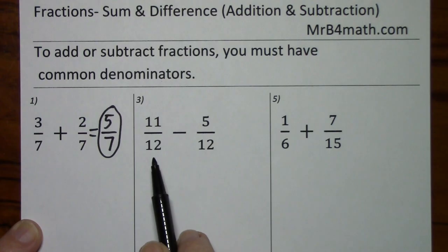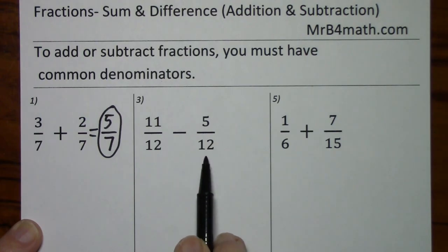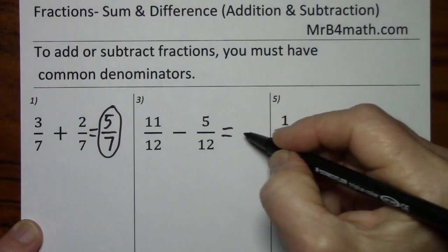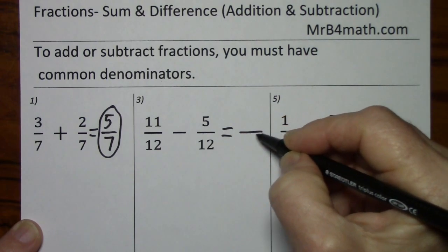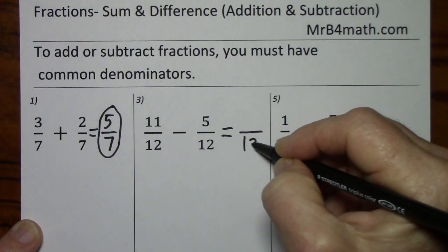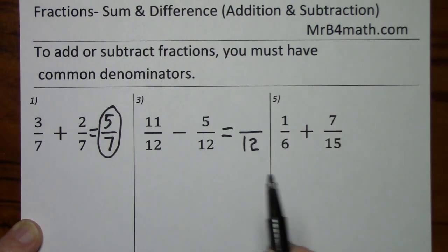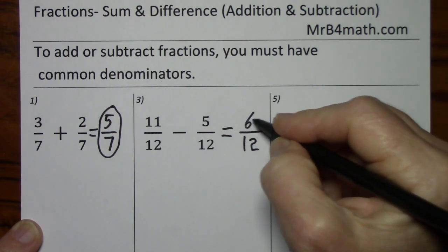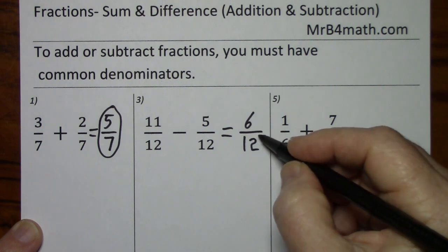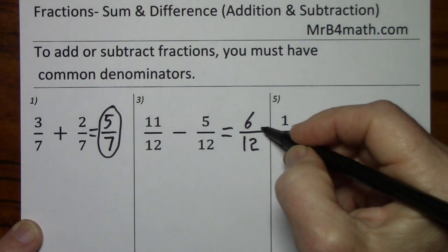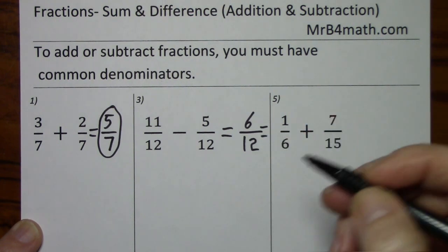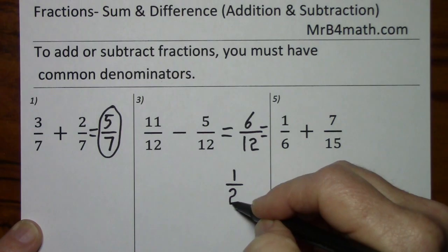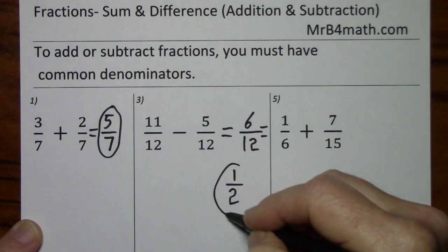Our next problem, we have common denominators. We know that we're going to keep the denominator, so we subtract numerators. But this will reduce — you have to write the answer as 1 half.